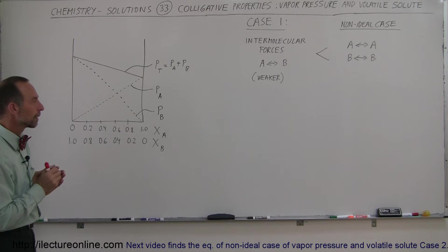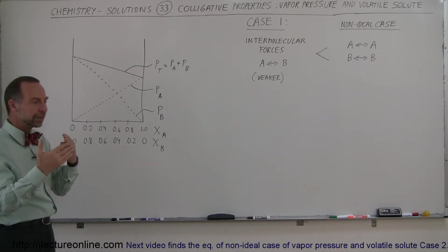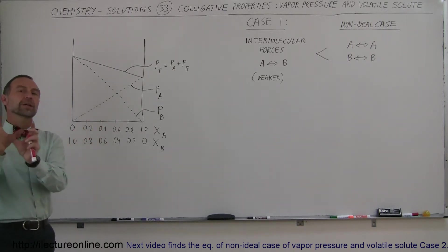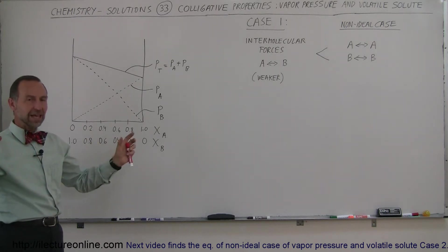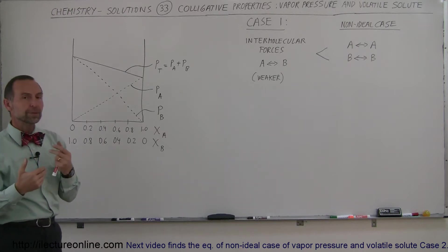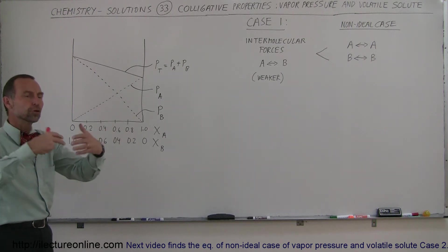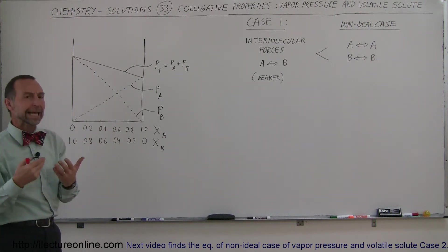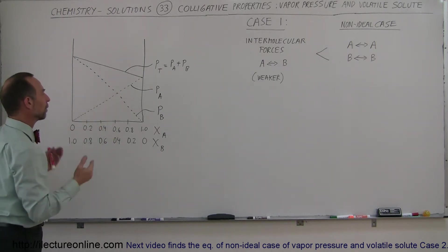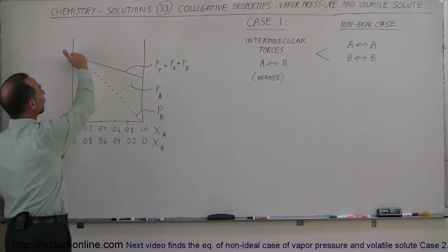When you put them together to get a solution, theoretically, if the intermolecular forces between the components of A and the intermolecular forces between the components of B are the same as the intermolecular forces between A and B, then there's no particular change in internal energy. The enthalpy is typically around zero, and so we get a typical chart where the vapor pressure caused by each of the two components simply adds up to the total vapor pressure.